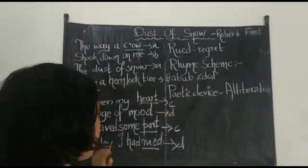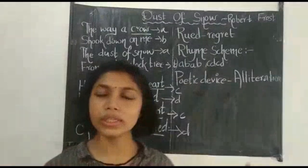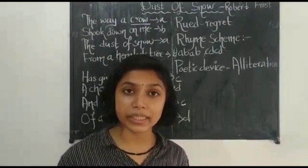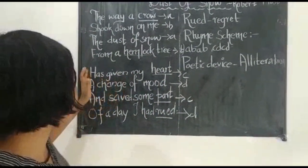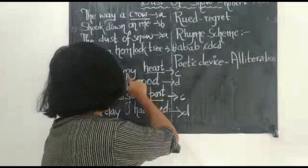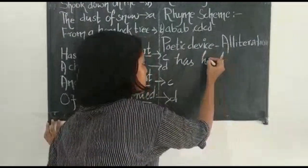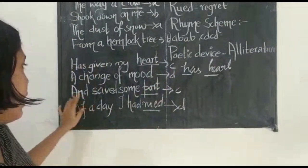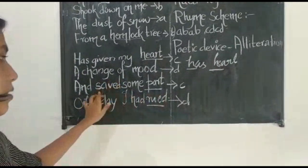Now let's find the poetic device in this poem. There is alliteration in the second stanza. Alliteration is the occurrence of the same sound or letter at the beginning of adjacent or closely connected words. In the first line of the second stanza, 'has given my heart,' the 'h' sound is repeated — so there is alliteration here. And in the third line, 'saved some part,' the 's' sound is repeated — so again there is alliteration.